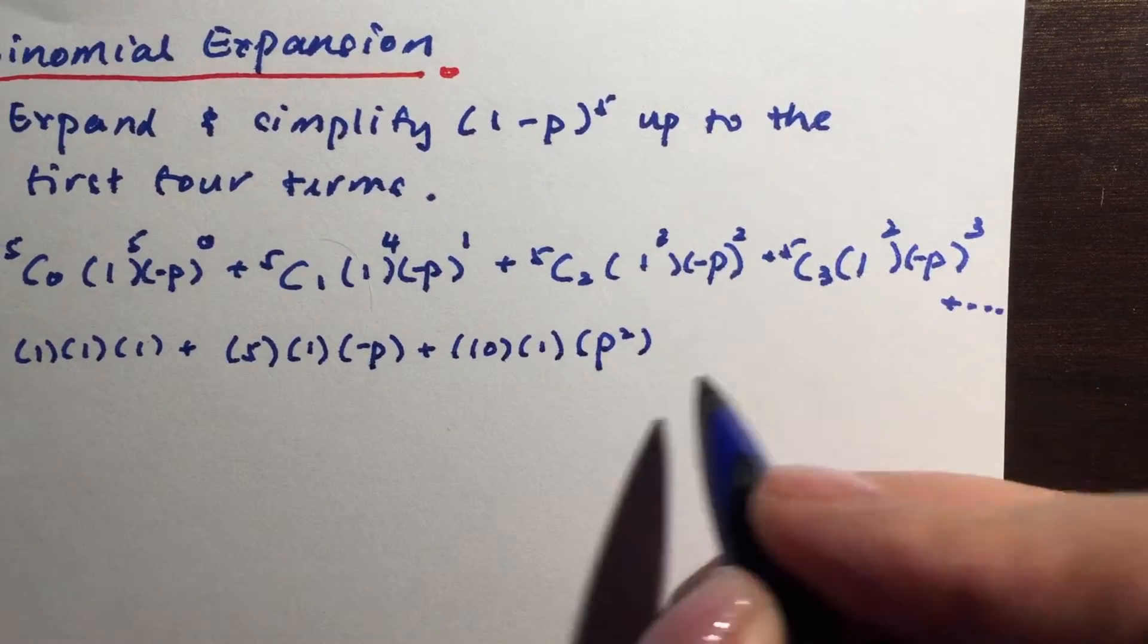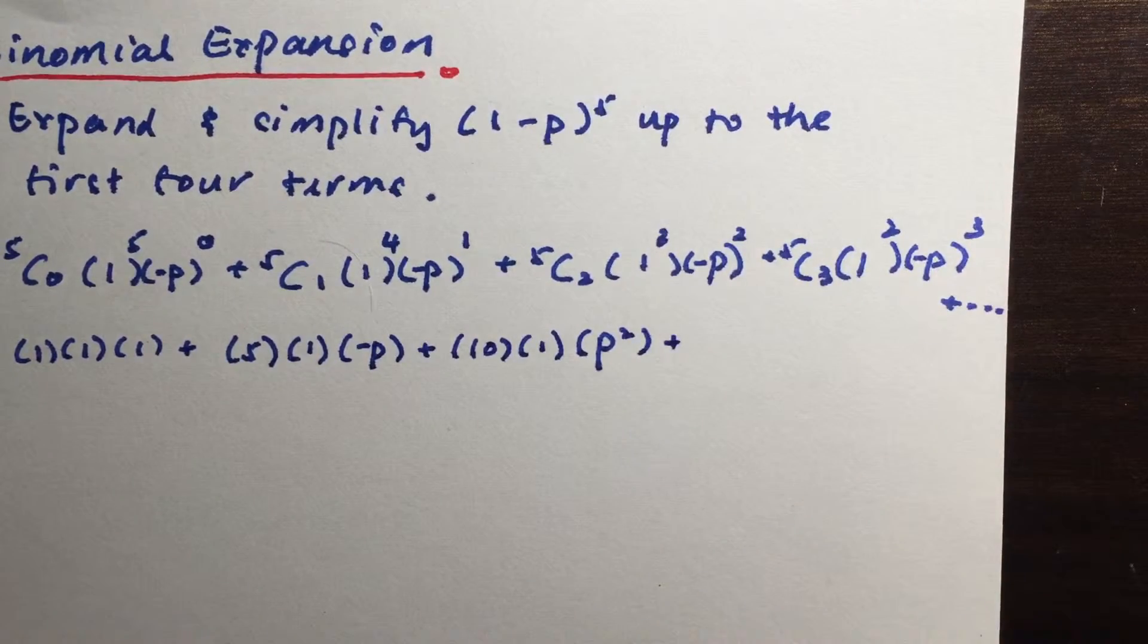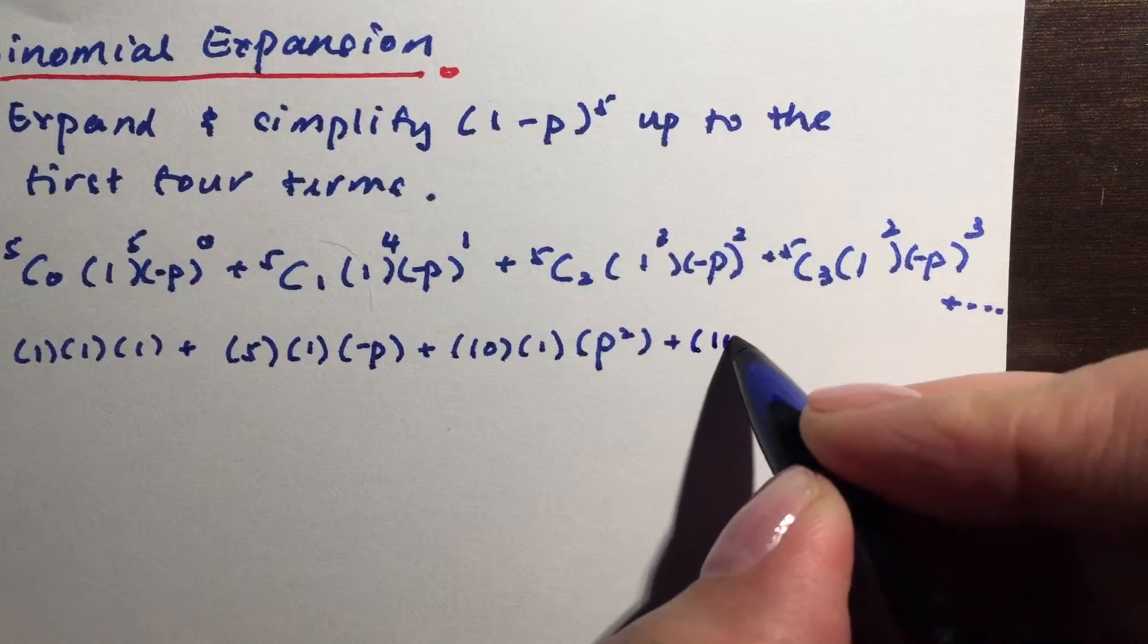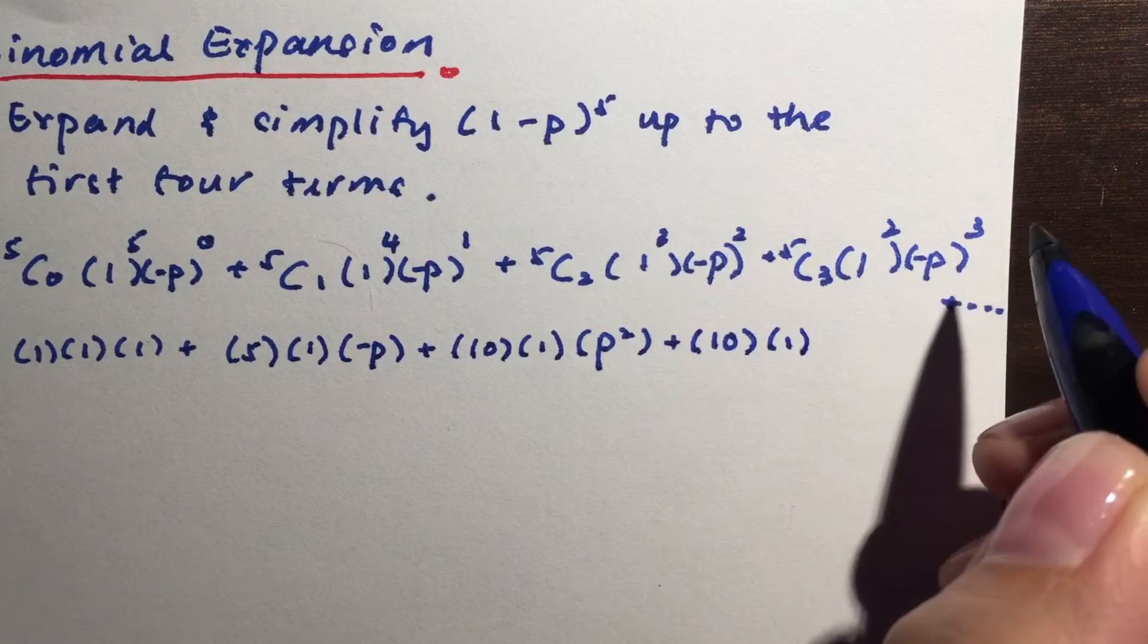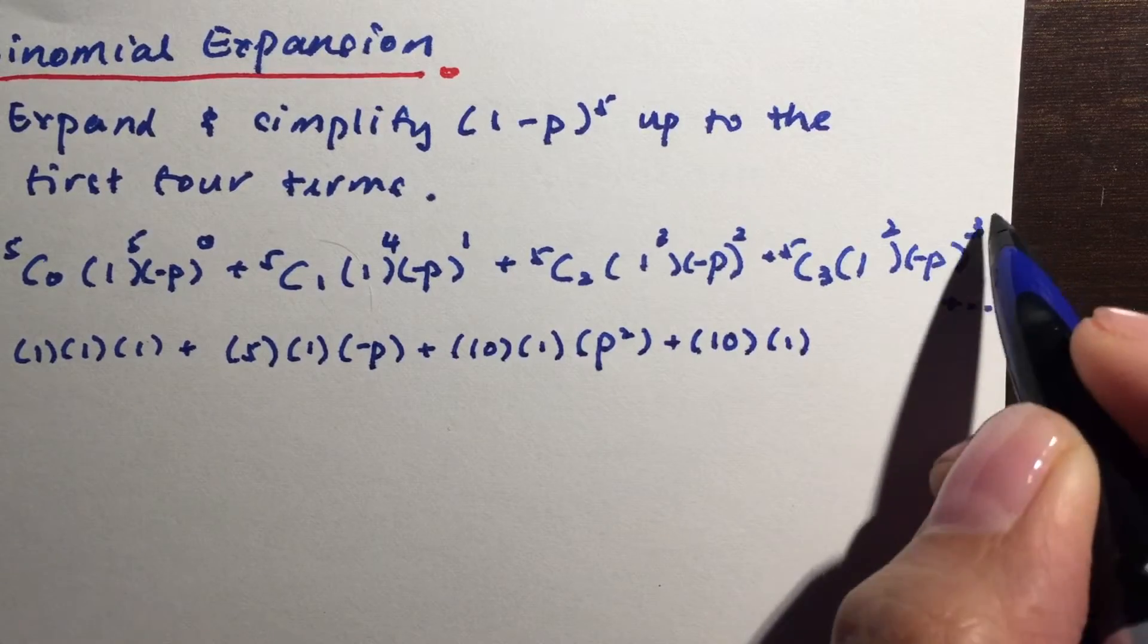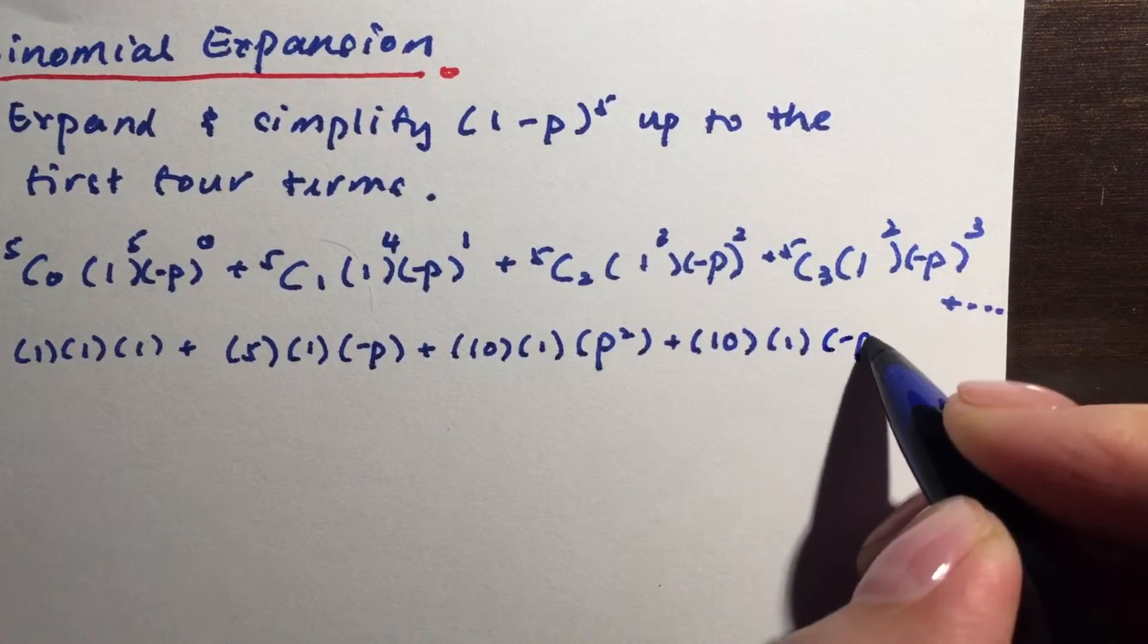And next we have 5 choose 3, so again you can press your calculator and you'll be able to get it as 10 again. 1 to the power of 2 is just 1, -P cubed. Because this is an odd power, so this will be -P cubed.